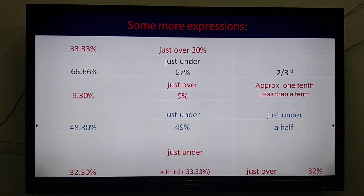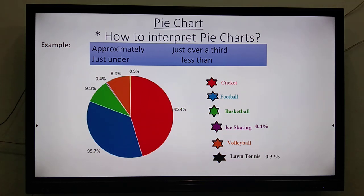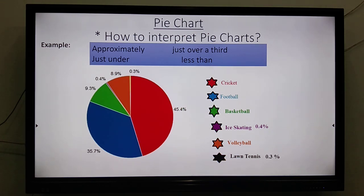There is nothing strictly wrong or right — these are just ways of expressing ourselves. When interpreting pie charts, some expressions we can use include: approximately, just over, a third, just under, less than. In your free time, you can look at a pie chart and practice expressing the values in expanded form without mentioning decimals.